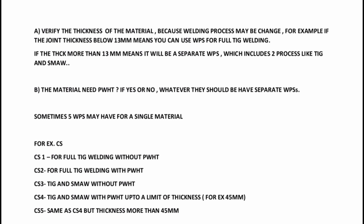CS4 is TIG and SMAW with PWHT, up to a thickness limit of 45 mm. 45 mm is the maximum material thickness for that WPS. That is TIG and arc welding with stress relief. If you have materials with TIG and SMAW using PWHT and the thickness is up to 45 mm, you can use that WPS.